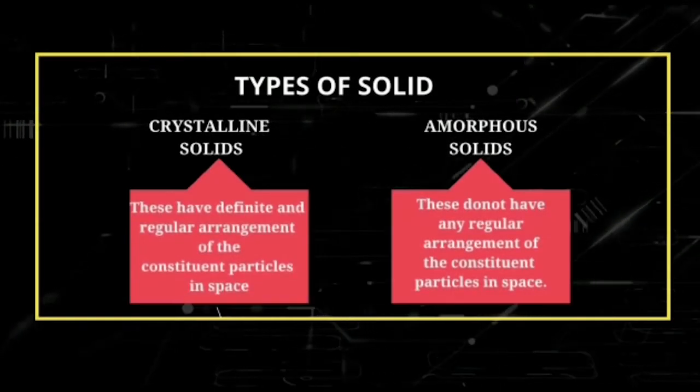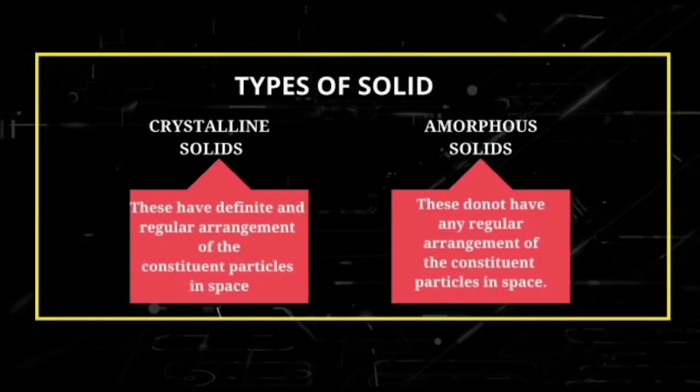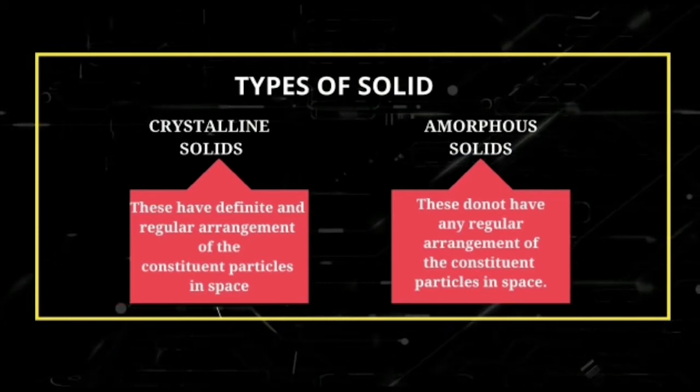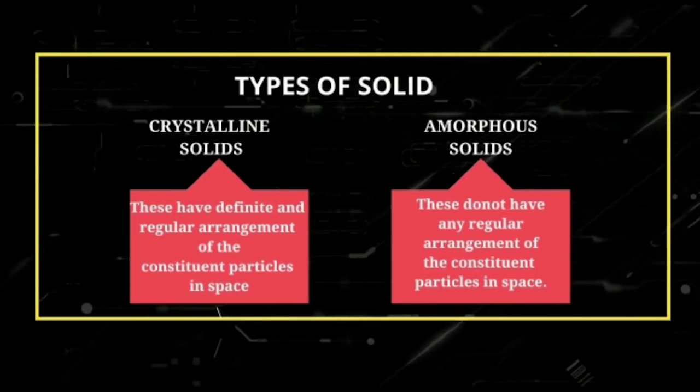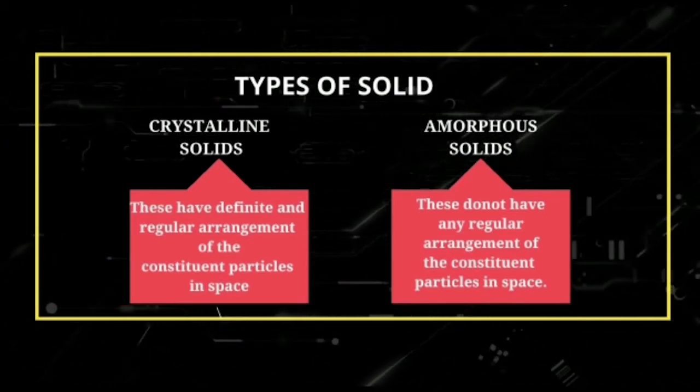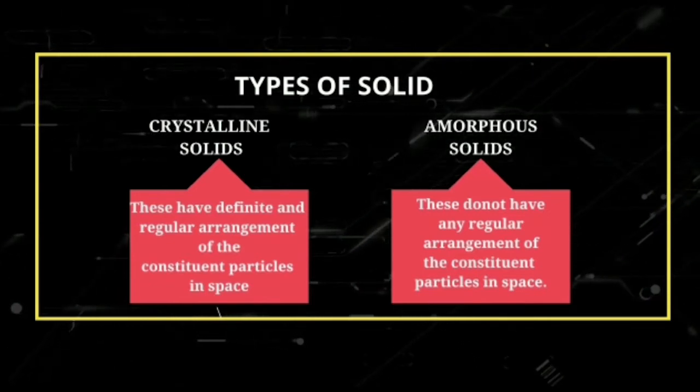There are two types of solid: crystalline solids. These have definite and regular arrangement of the constituent particles in space. Amorphous solids do not have any regular arrangement of the particles.